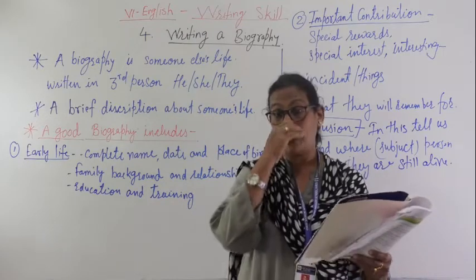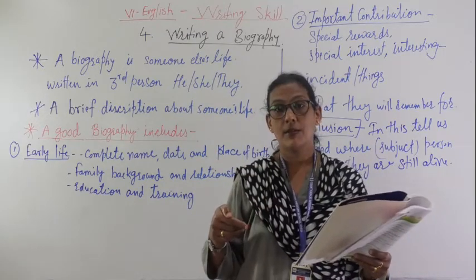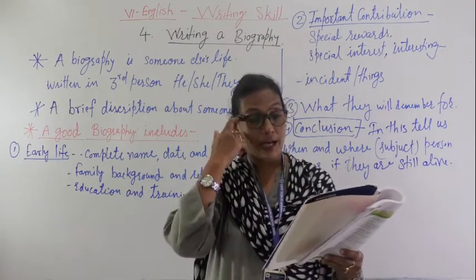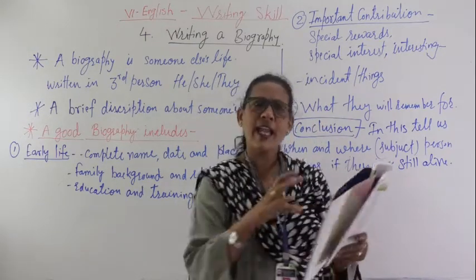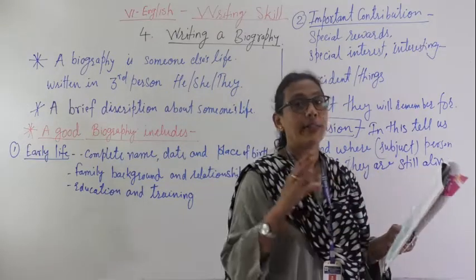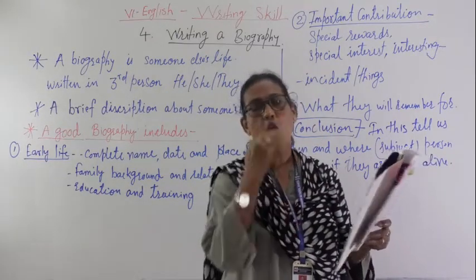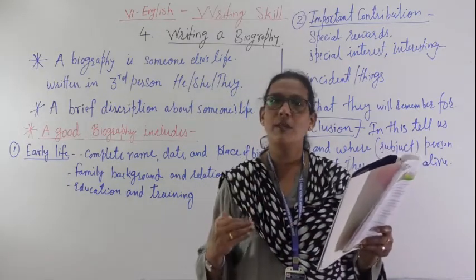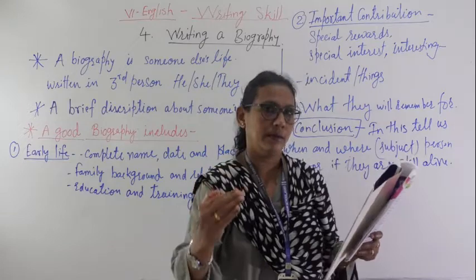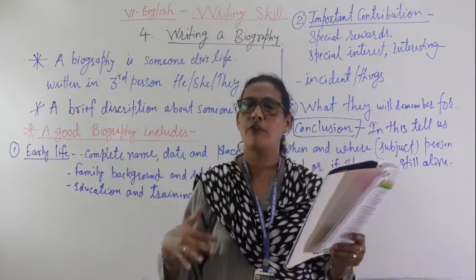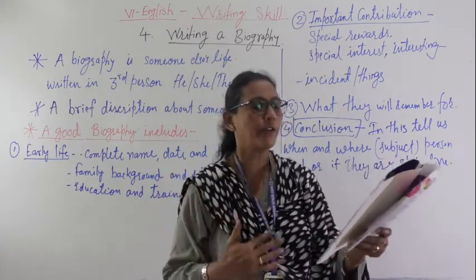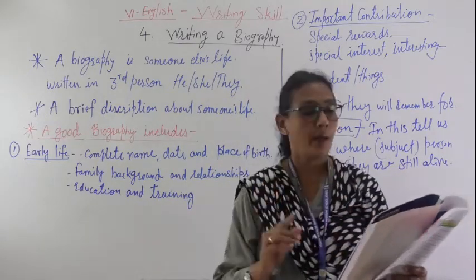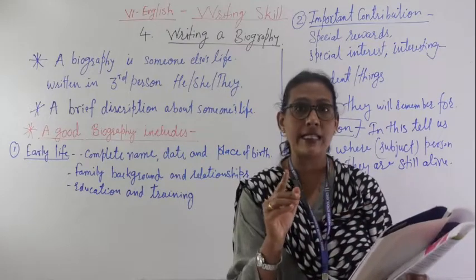He died on 7th August 1941. They have given this much information. Then you have to elaborate all these points in a chronological order - that will become a biography of that personality. For example, the textbook has given: Rabindranath was born on 9th May 1861 in Kolkata. His parents were from the famous Thakur family of Kolkata.